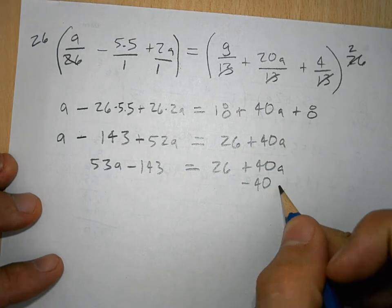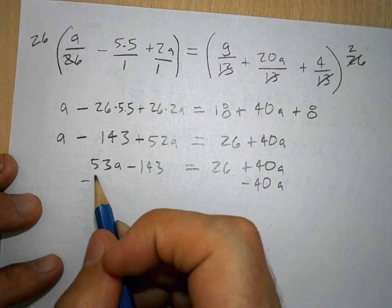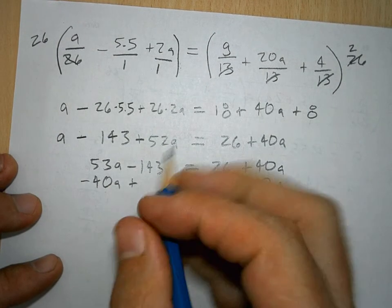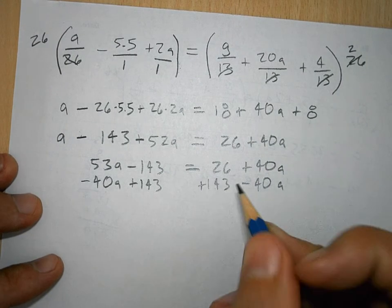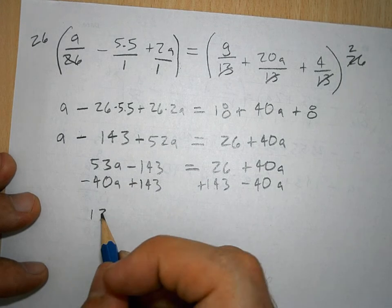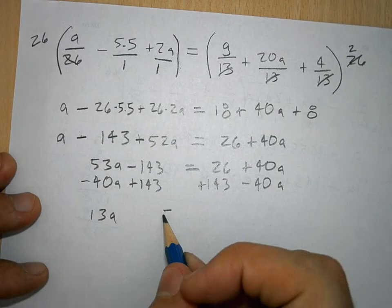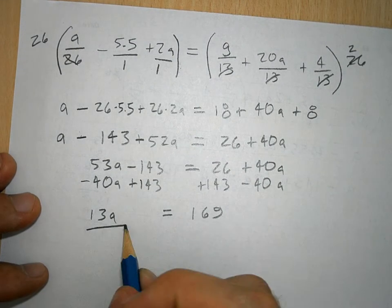I want to combine my like terms of the 40A. And so, I subtract these from both sides, and I add this to both sides. So, when I do that all together, 53 minus 40A is I have 13A equals over here. It looks like this is 169.